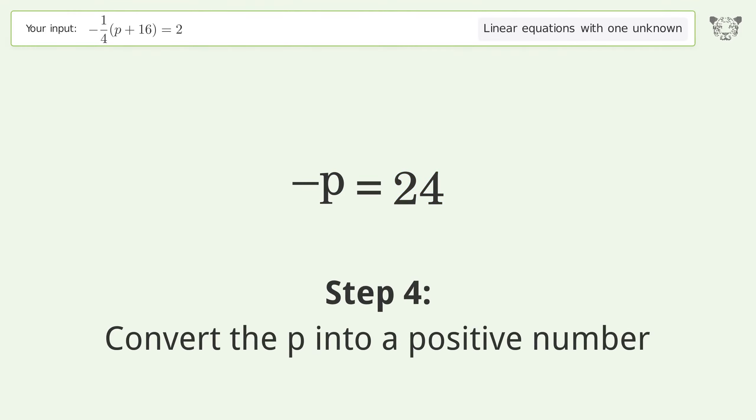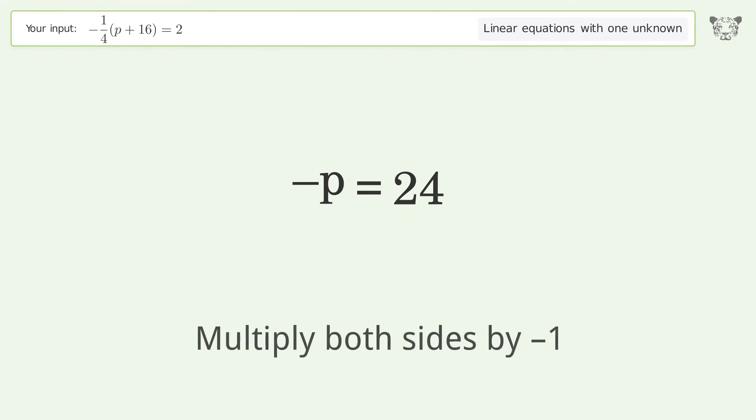Convert the p into a positive number. Multiply both sides by negative 1. Remove the ones. Simplify the arithmetic.